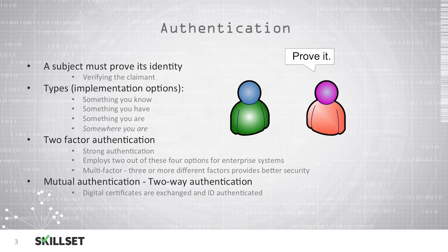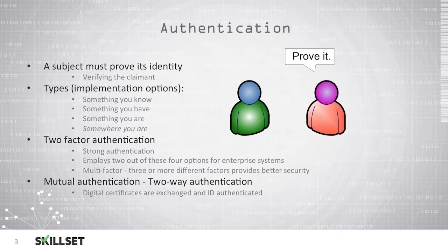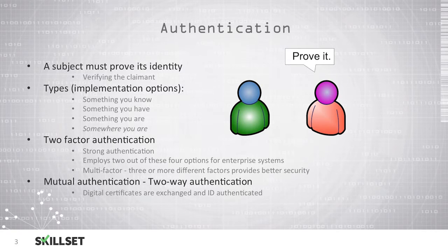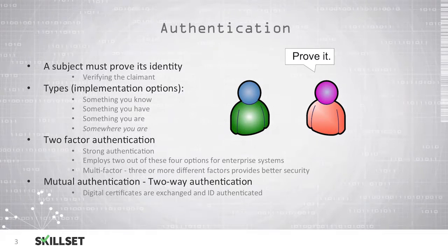We can also have something you are. This is something that makes up a person, such as a fingerprint or another biometric, such as an iris scan or perhaps a voice print authentication. Our fourth type of implementation option is somewhere you are. Here we use a geographical location to identify a user or to identify an anomaly or a new location that a user may not usually log in from.